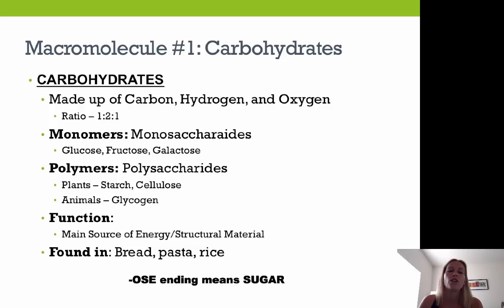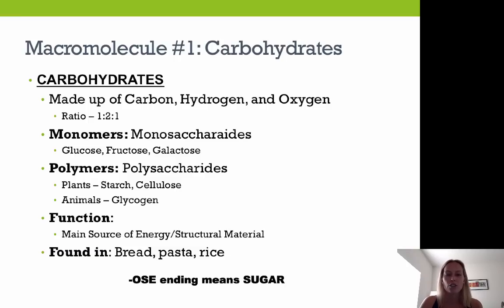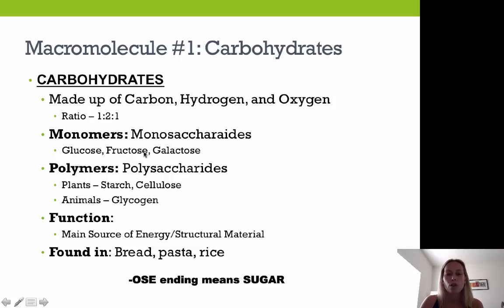Carbohydrates are made up of carbon, hydrogen, and oxygen atoms in a specific ratio: for every one carbon, there are two hydrogens and one oxygen — a 1:2:1 ratio. The monomer of a carbohydrate is called a monosaccharide. 'Mono' means one, and 'saccharide' means sweet. Examples of monosaccharides are glucose, fructose, and galactose.